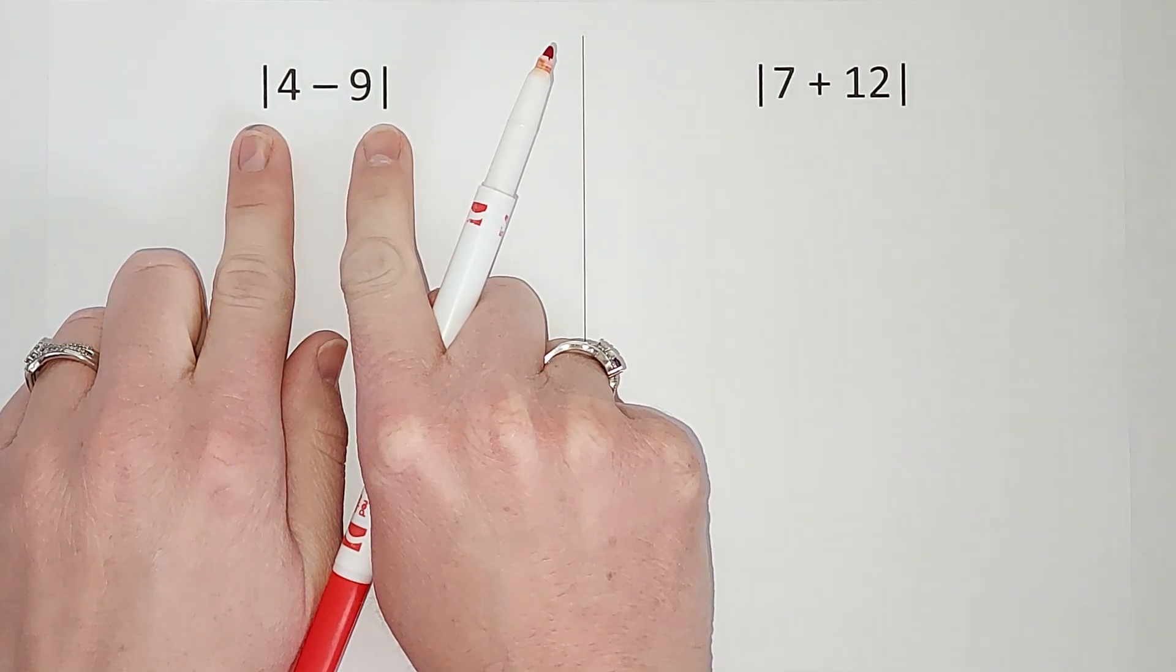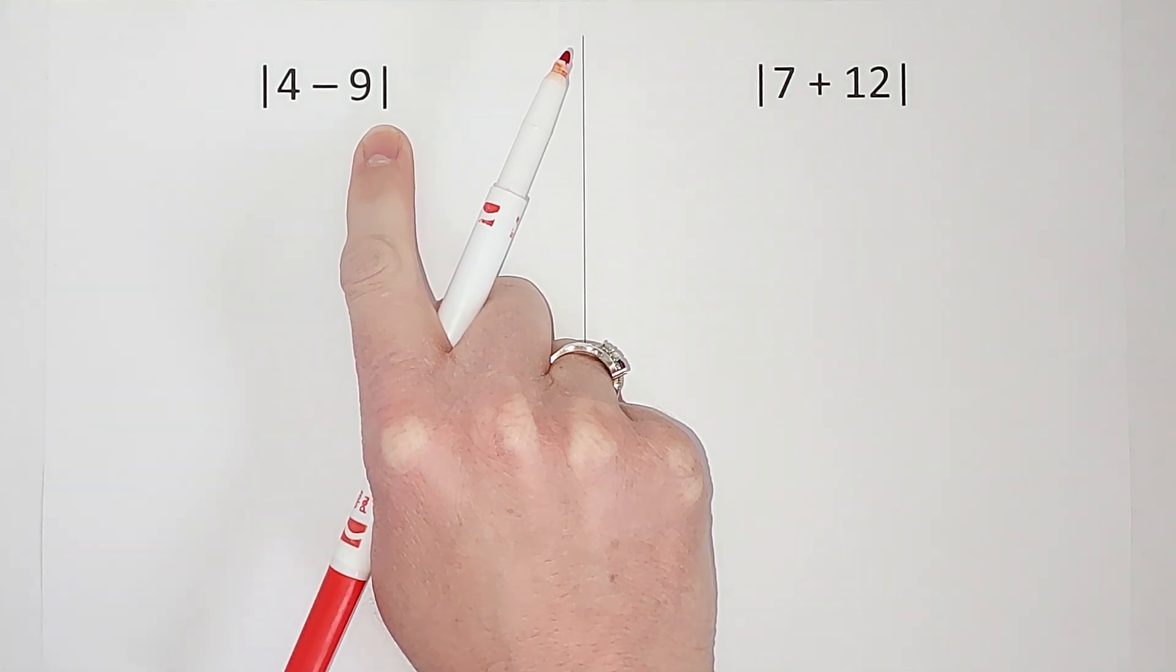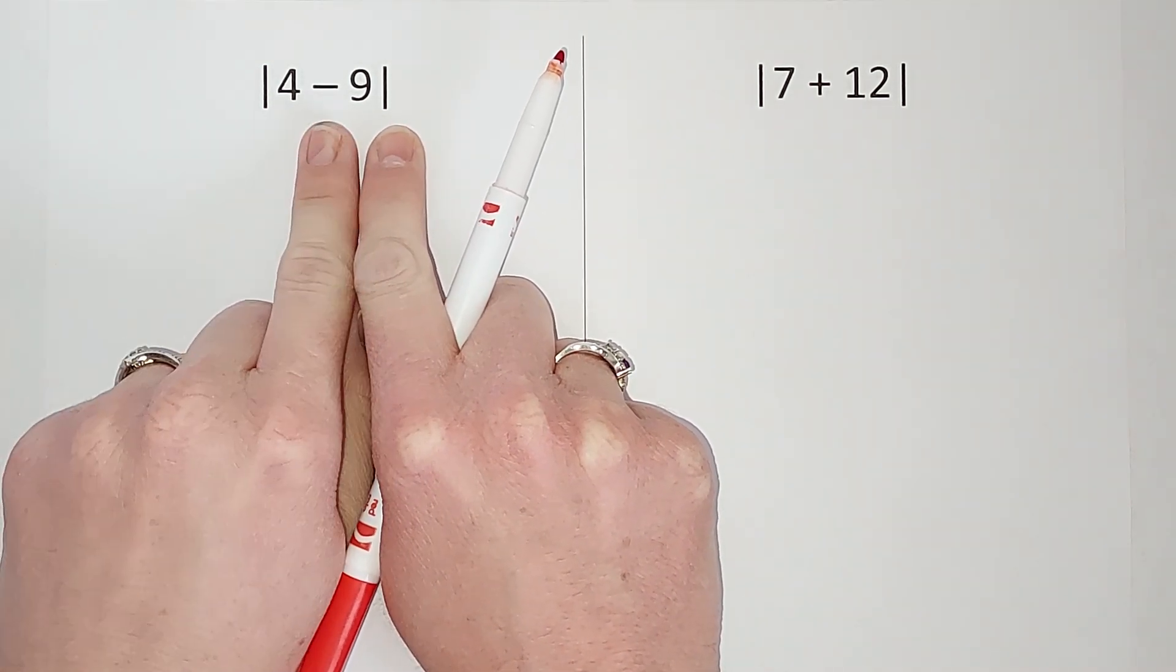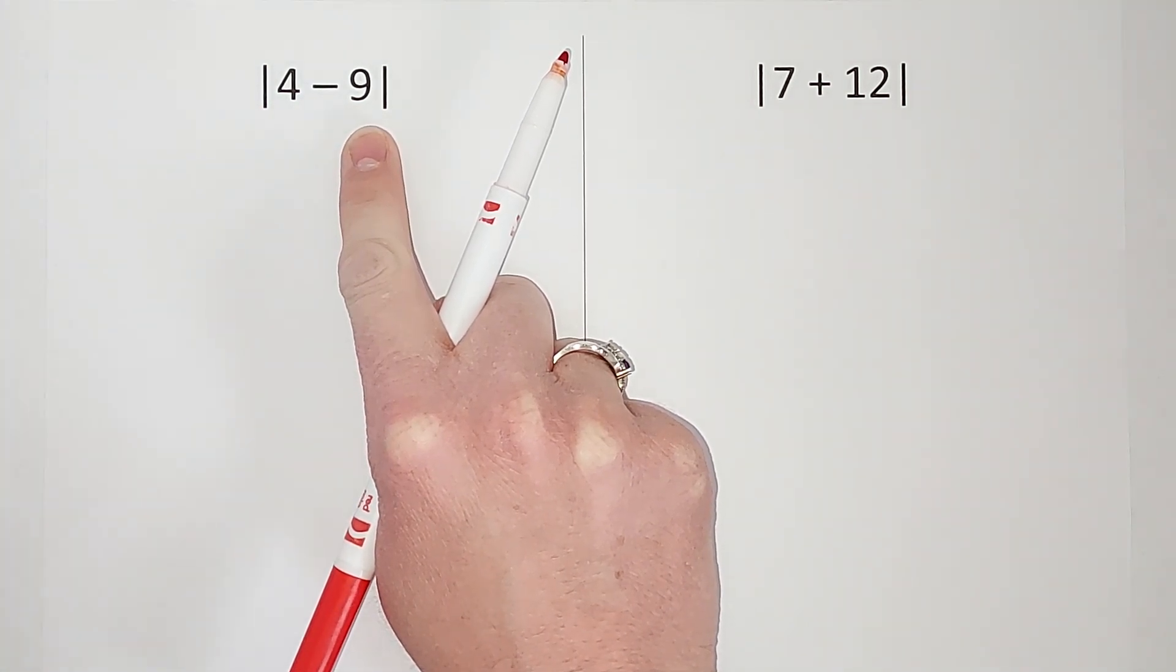So when we have these absolute value markers, they're asking us for a distance, right? They're asking us how far is this number from zero? But this is four minus nine. We want to simplify it down so it's just one number before we figure that out.